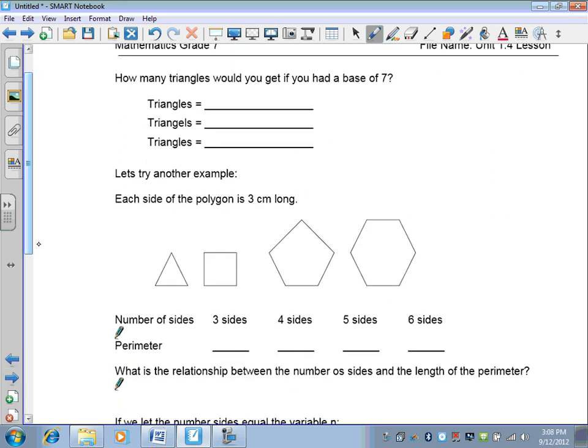How many triangles would you get if you had a base of seven? In this case, when you're doing this, you're going to put down the formula, the substitution, and the answer. So to get the number of triangles, I take the base and then multiply it by the base. Since I'm given seven as the base, it's seven times seven, which is 49.